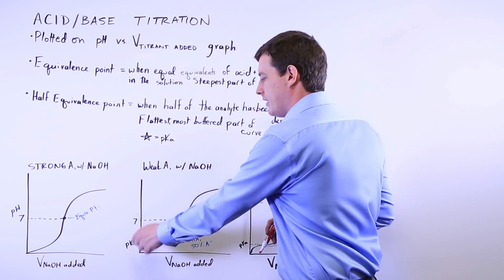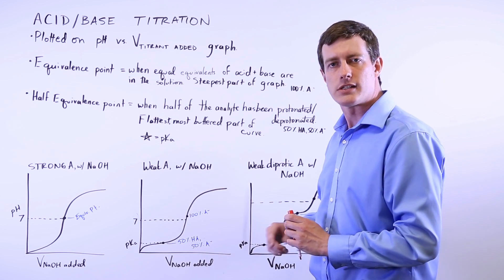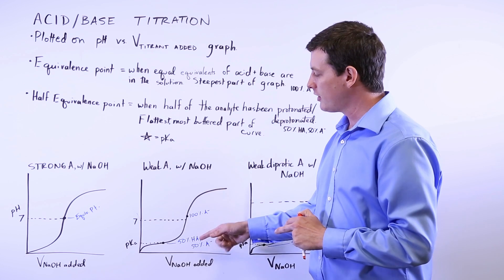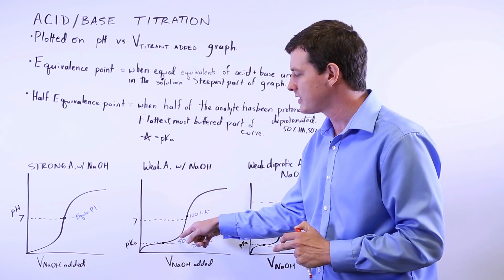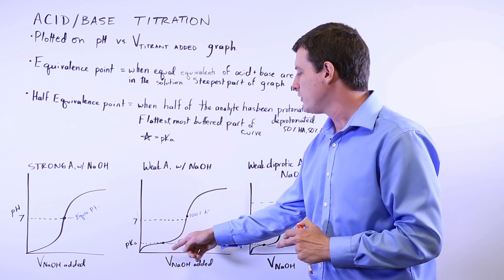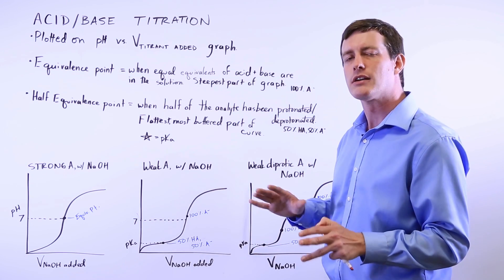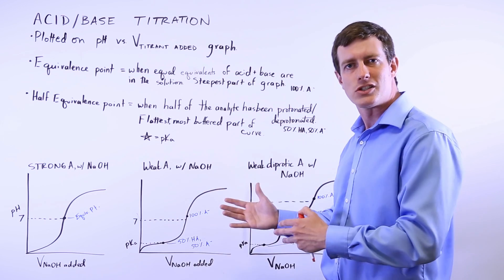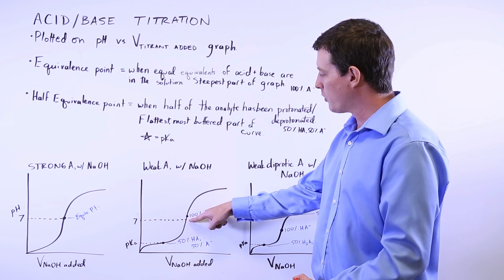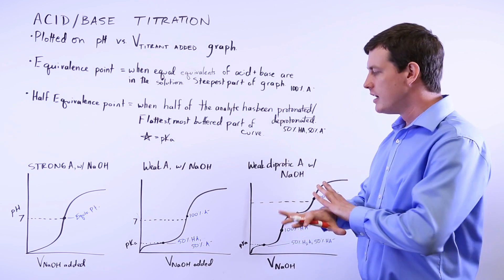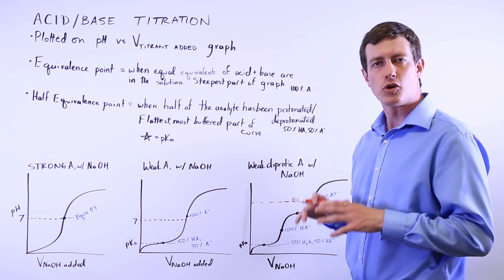At the half equivalence point, you've added enough NaOH to deprotonate half of the acid particles, so the other half still have their proton. It's very buffered — notice that if you were to add or remove a fair bit of base, you wouldn't see much change in pH. That is the definition of a buffer: something that resists pH changes in response to adding base or acid. As we continue, we reach the equivalence point where 100% of the acid has been deprotonated and all acid particles now exist as their conjugate base.